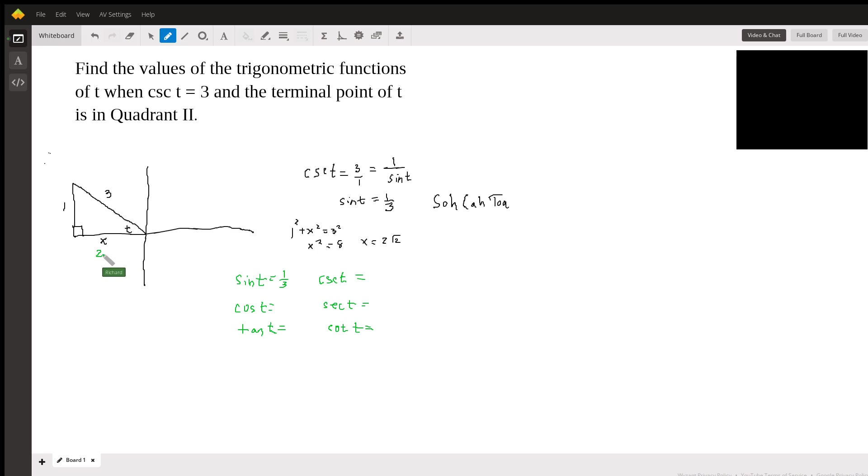Now this we found to be two root two. So cosine is two root two over three, which is adjacent over hypotenuse. Tangent is opposite over adjacent, so that will be one over two root two. We're not supposed to leave a radical in the denominator, so we multiply top and bottom by the square root of two. You're going to get square root of two on the top and four on the bottom. That will be your answer for the tangent.